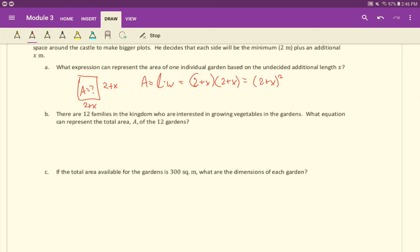Next, letter B says there are 12 families in the kingdom who are interested in growing vegetables in the gardens. What equation can represent the total area A of the 12 gardens? This was the area of one garden. If we want to do 12 gardens, A equals 12 times (2+x) quantity squared - 12 of these gardens.